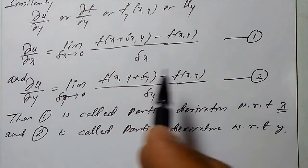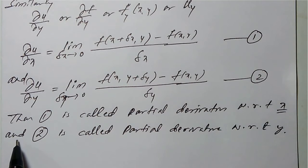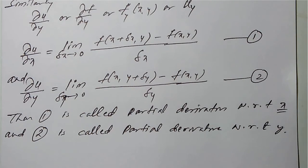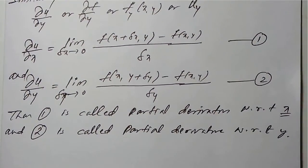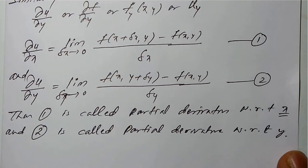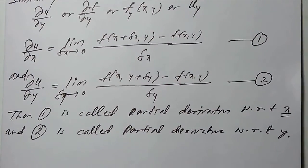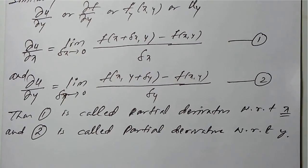You can observe here: equation one is called the partial derivative with respect to x, and equation two is called the partial derivative with respect to y. In this way we define partial differentiation. Now we will closely observe problems — how to solve partial derivative examples. We will see how to differentiate a given function partially through examples.